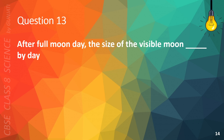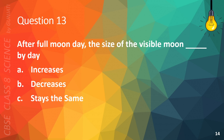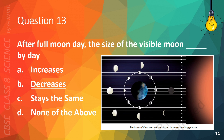Question 13. After Full Moon Day, the size of the visible Moon blank by day. A. Increases, B. Decreases, C. Stays the same, or D. None of the above. The correct answer is B. Decreases. This is a picture of the positions of the Moon.